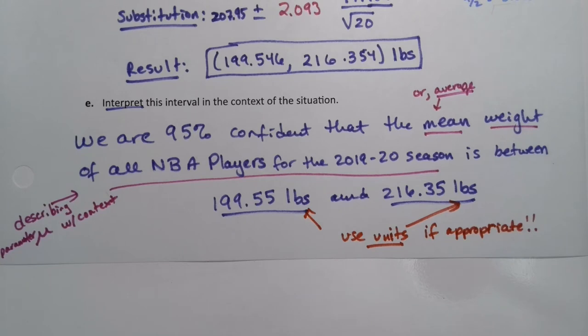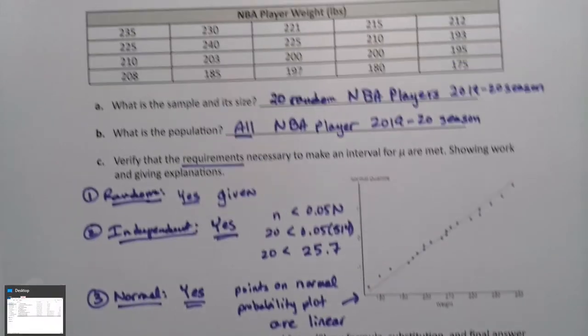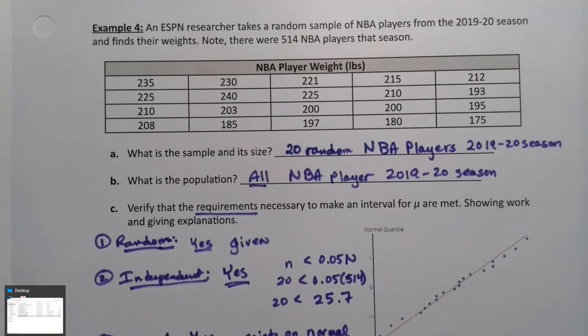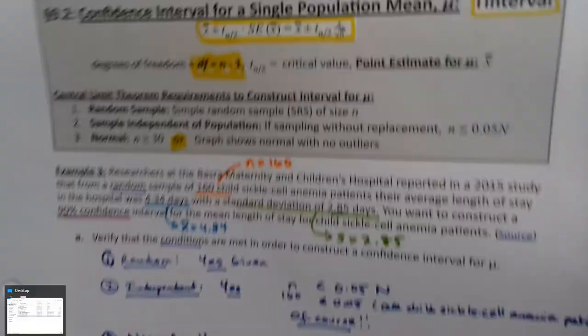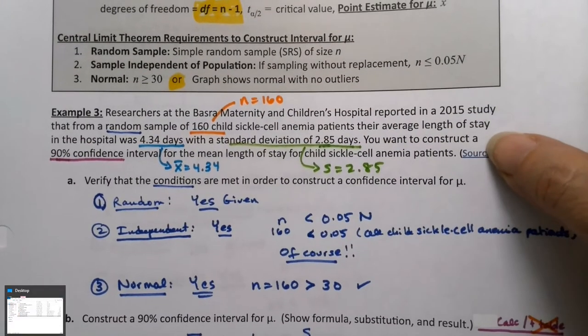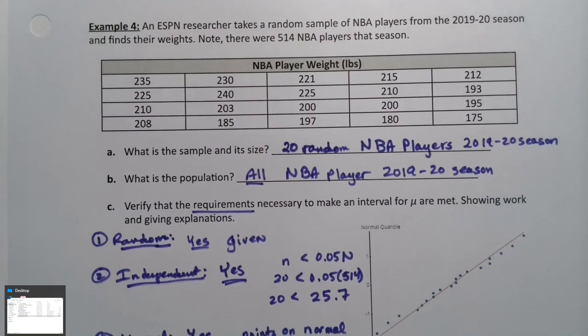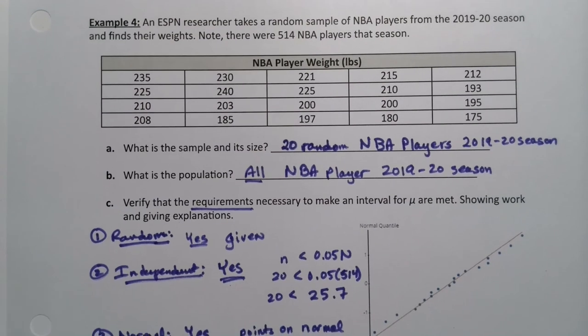And so now we know how to find the confidence interval for a mean and for a proportion. And for a mean, we know how to do it two ways - one with a data set like this particular one was, and one with a summary where it's all written out in a big paragraph. So we can now discern between the two and do both of them if required.